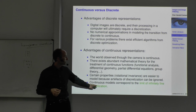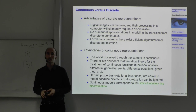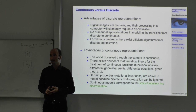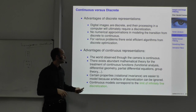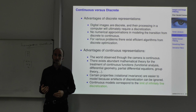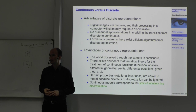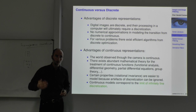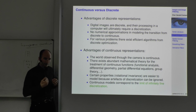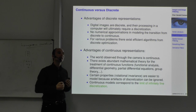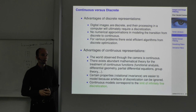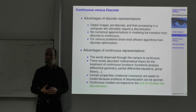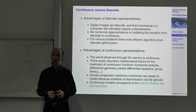In some sense, continuous models correspond to the limit of infinitely fine discretization. With more advanced sensors we are actually getting closer to that limit — digital cameras have more and more megapixels, video camera frame rates get higher and higher, so the discretization is approximating more and more a continuous world.